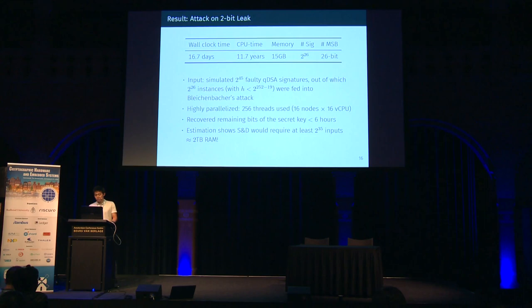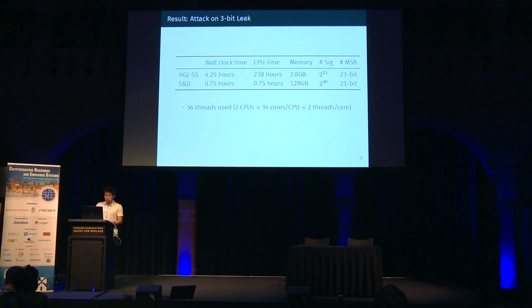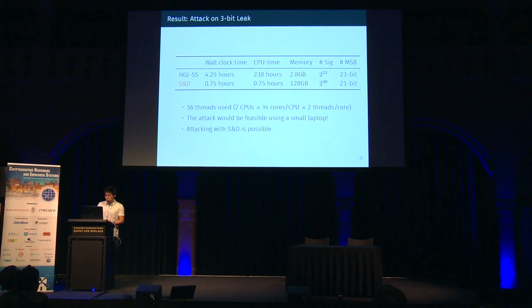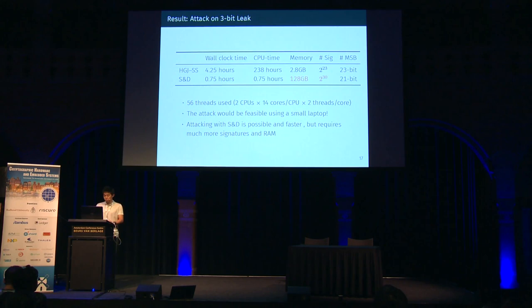We also attacked the easier case using 3-bit nonce leaks. The wall-clock time was much shorter — less than 10 days CPU time — and memory consumption was less than 3 gigabytes, meaning Bleichenbacher's attack would be feasible even on a small laptop. It turned out that attacking with sort-and-difference is also possible in this case, and as expected, that range reduction was faster than the Schroeppel-Shamir-based one. However, the sort-and-difference approach consumed over 100 gigabytes of memory and required billions of signatures, which would not fit in a commonly used laptop.